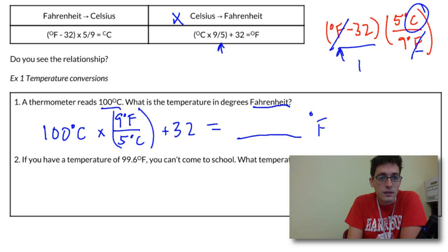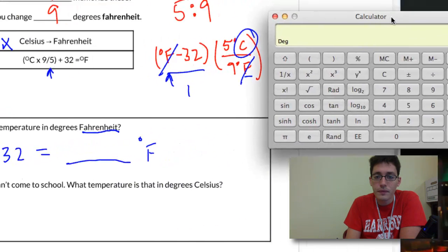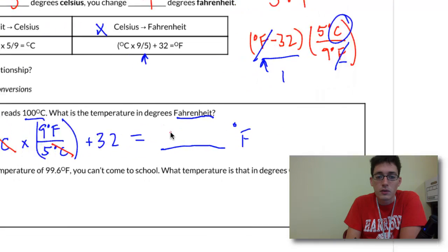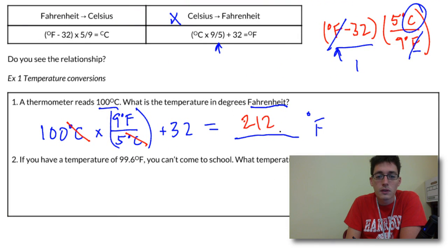Notice your units are canceling out. We've got Celsius in the numerator with the 100, so that cancels with this one in the denominator. Let's grab our calculator: we do 100 times, in parentheses, 9 divided by 5, close that, equals, then we add 32, and equals 212 degrees Fahrenheit. That's a very simple temperature conversion.